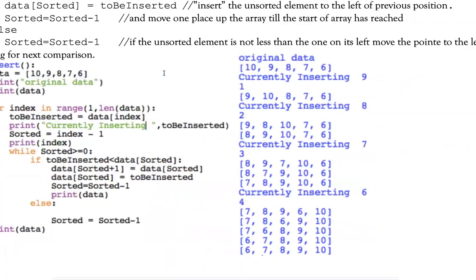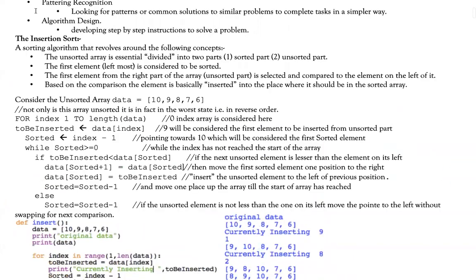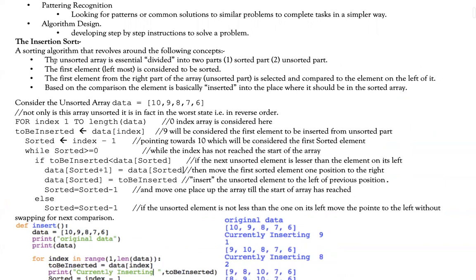We insert this unsorted element where it belongs in the sorted area — that's why it's called insertion sort. We'll first look at the algorithm and then see how it works in Python. The unsorted array is logically divided into two parts: the sorted part and the unsorted part. The first element at index position zero is considered sorted, and elements from position one onward are selected and compared to elements on the left, then inserted into the correct position.